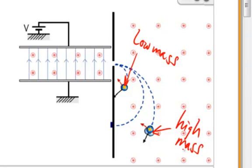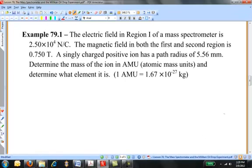Let's solve a numerical problem. This is example 79.1 from your text. The electric field in region one of a mass spectrometer is 2.5 times 10 to the 4 newtons per coulomb. The magnetic field in both the first and second region is 0.75 tesla. A singly charged positive ion has a path radius of 5.56 millimeters. Determine the mass of the ion in atomic mass units and determine what the element is. One atomic mass unit is equal to the mass of a nuclear particle, roughly the mass of a proton or the mass of a neutron, 1.67 times 10 to the minus 27 kilograms.